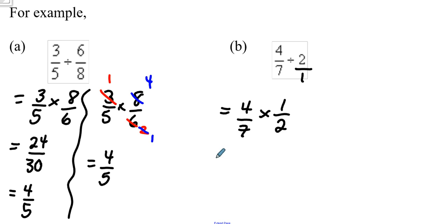And then again, we could go ahead and just multiply, 4 times 1 is 4, 7 times 2 is 14, and we could simplify, so 2 goes into both of those.